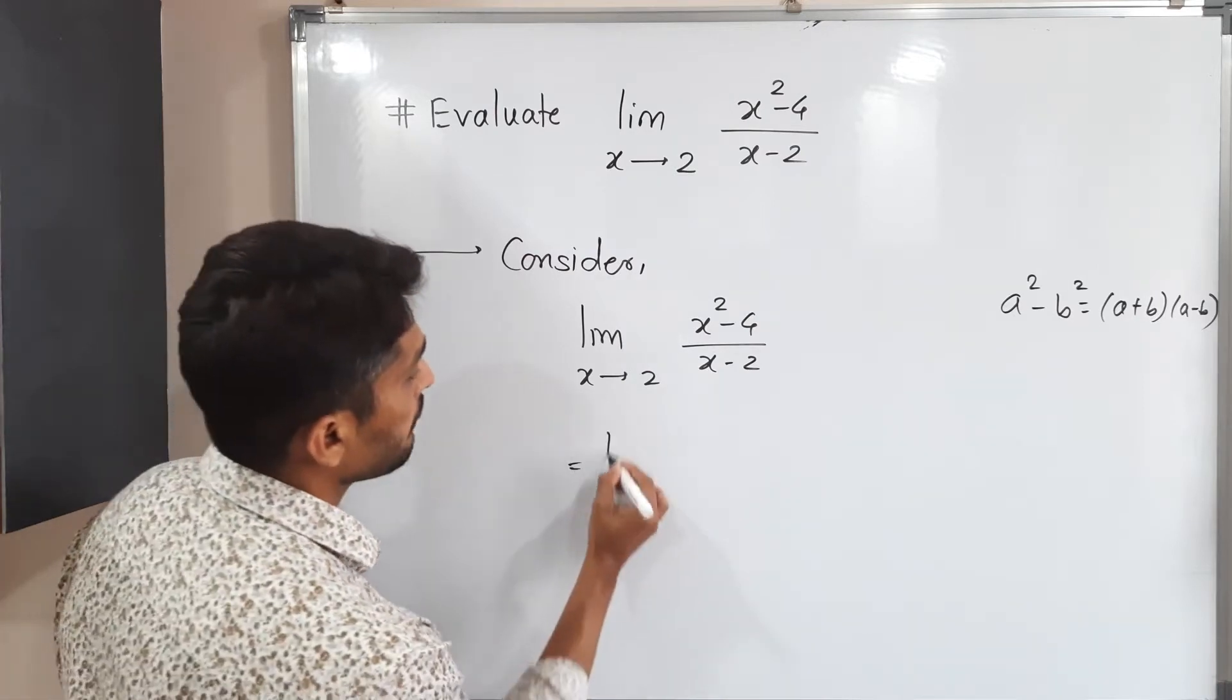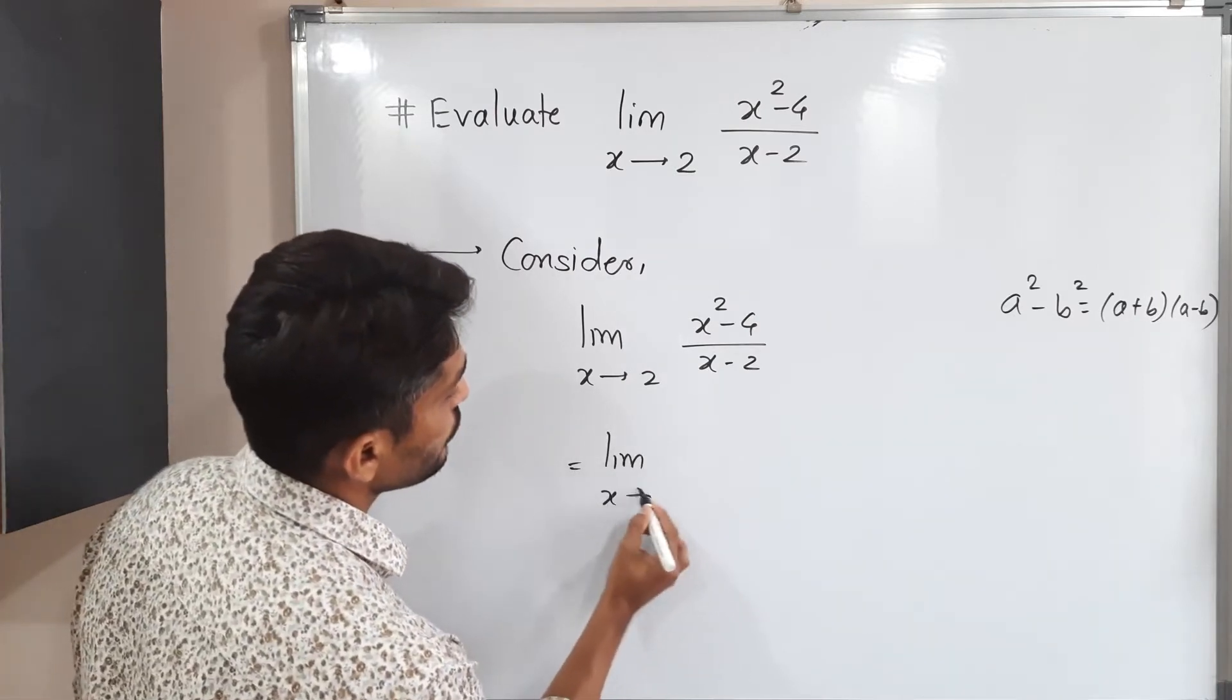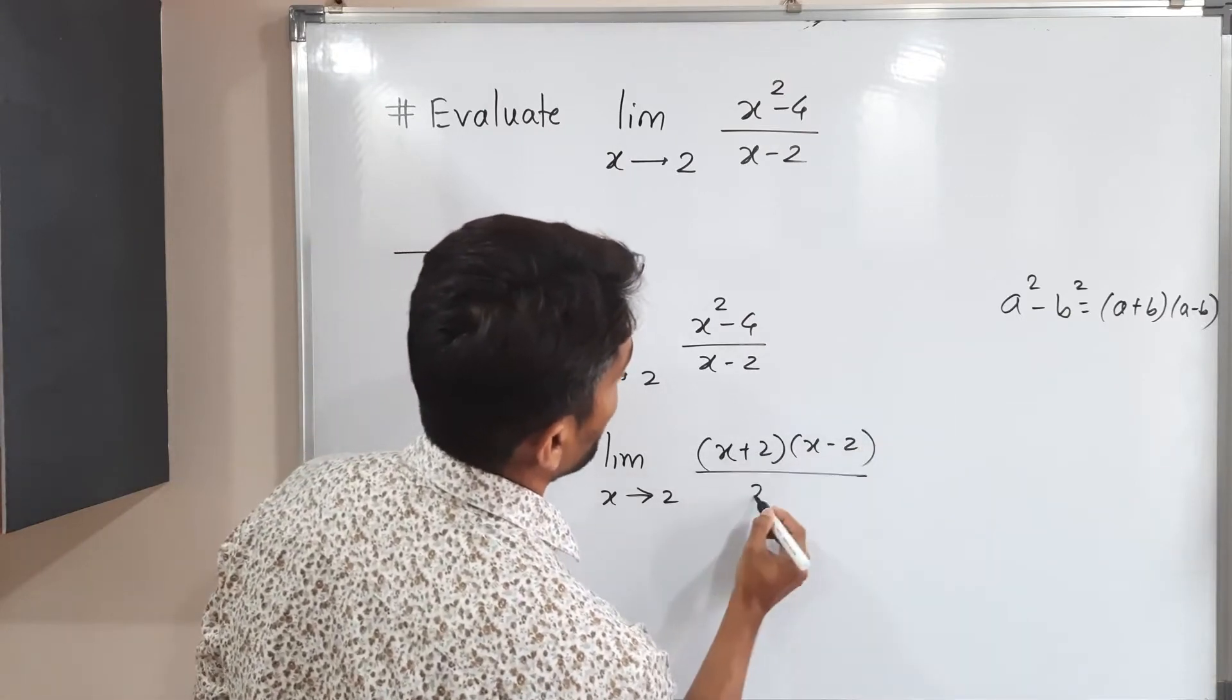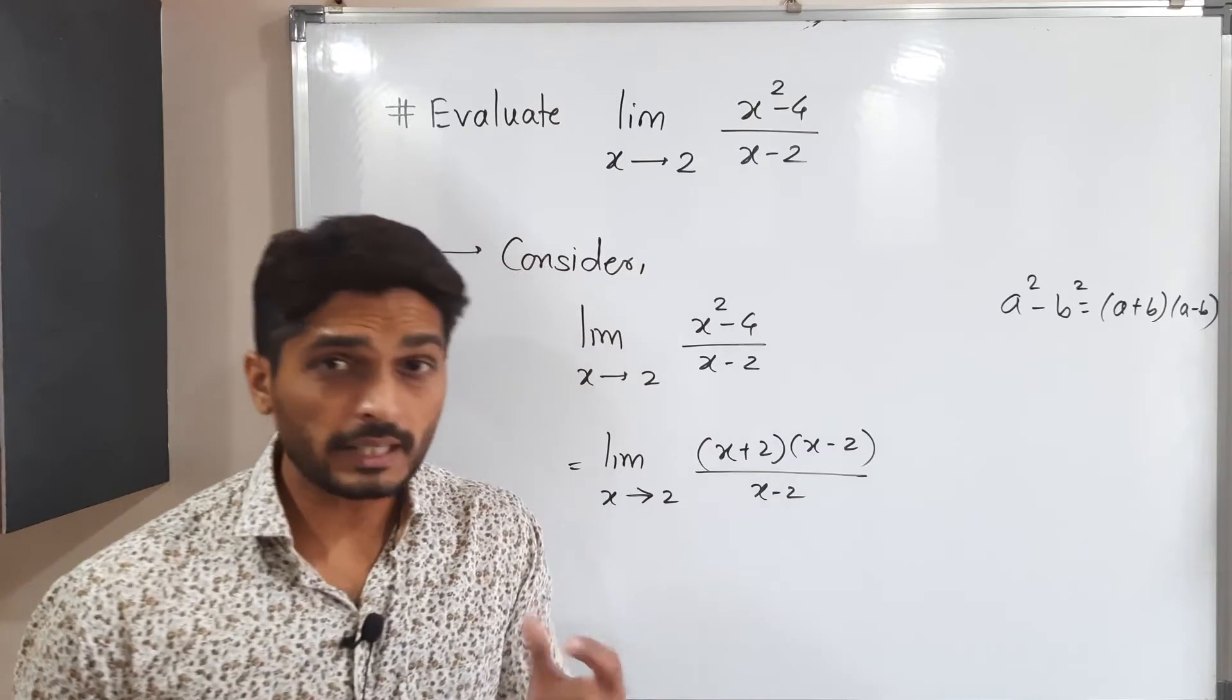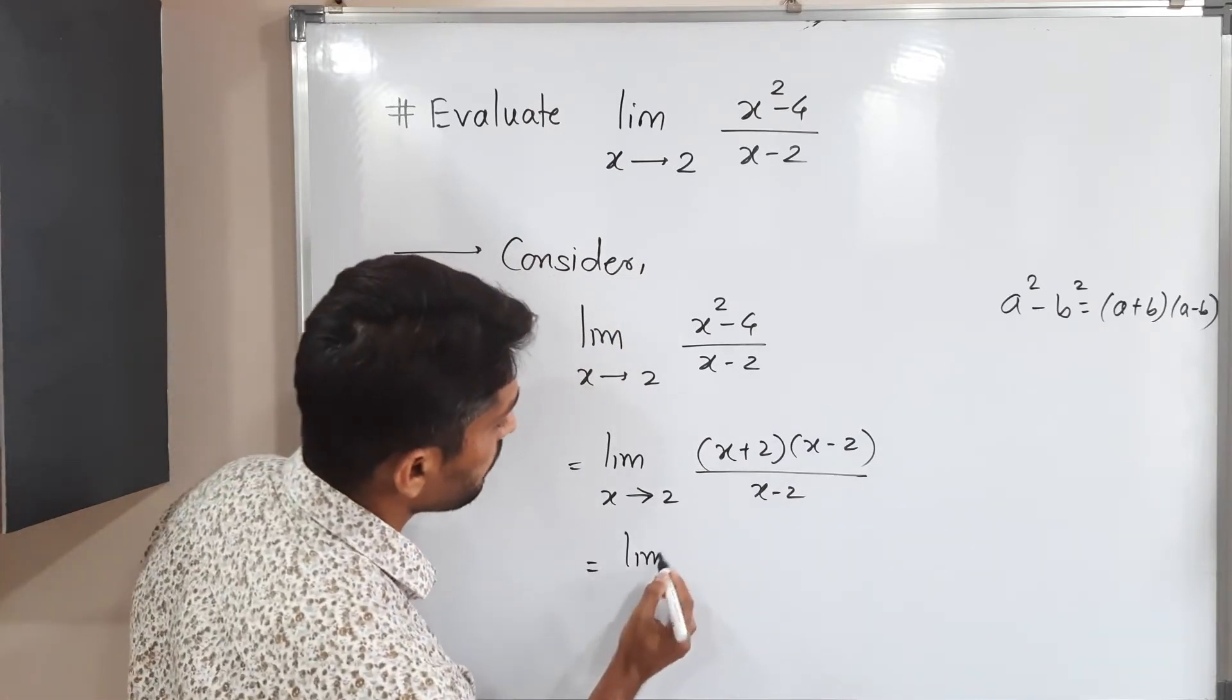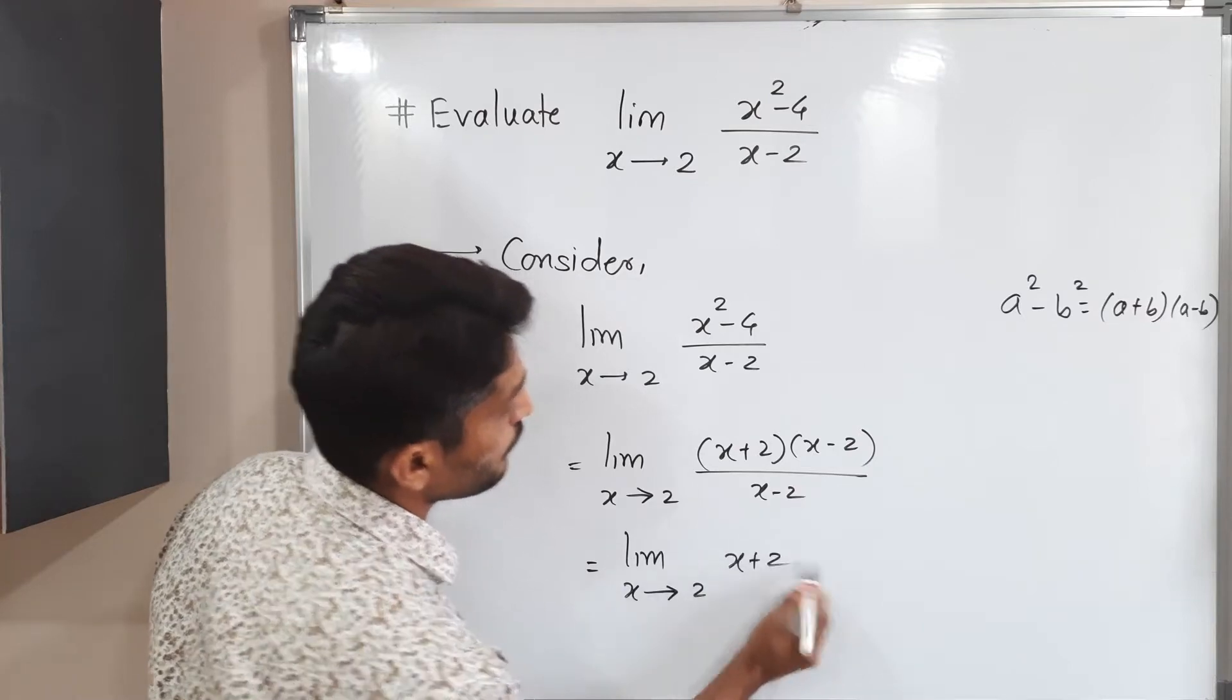What will you get? Limit x tends to 2, x plus 2, x minus 2 divided by x minus 2. So that bracket x minus 2 will get cancelled. So we will have limit x tends to 2, x plus 2.